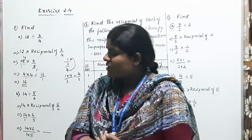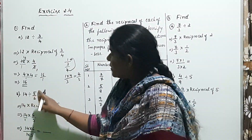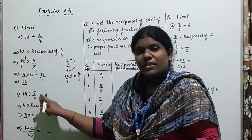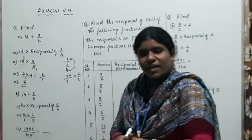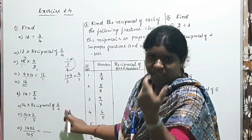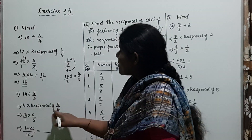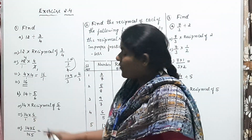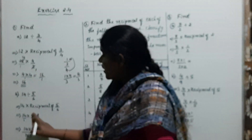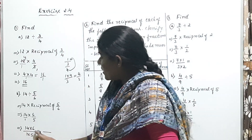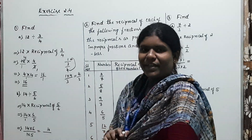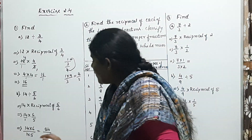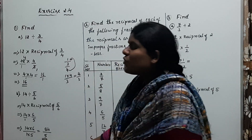Using the same method, the second example: 14 divided by 5/6. Here, write 14 into the reciprocal of 5/6. The reciprocal is found by interchanging numerator and denominator: 5 shifts to denominator, 6 shifts to numerator. So 14/1 multiplied by 6/5. Now multiply: 14 times 6 — 6 fours are 24, carry 2; 6 ones are 6, plus 2 is 8. So 14 sixes are 84. And 5 ones are 5. The answer is 84/5.